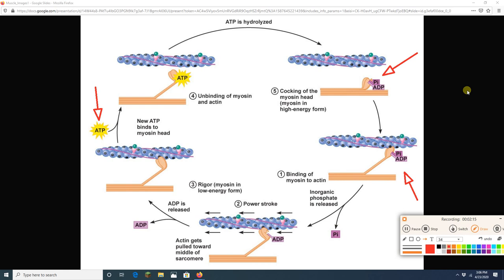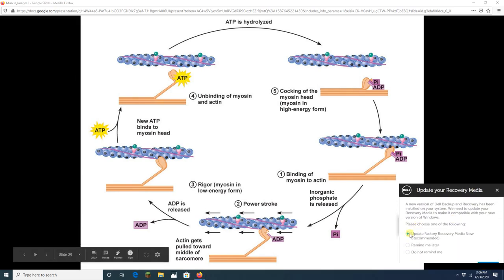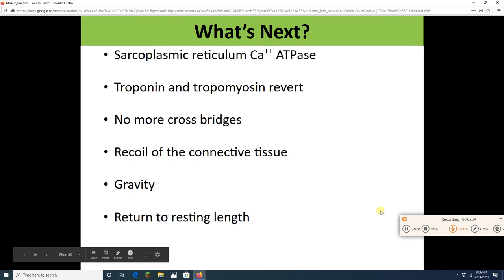Now, once we've contracted, how do we go back to normal? Well, something's going to happen. The sarcoplasmic reticulum is going to start to vacuum up the calcium it released. There is a protein called the sarcoplasmic reticulum calcium ATPase that is going to break down ATP to get calcium out of the sarcoplasm and back into the SR. With this decline in calcium, troponin and tropomyosin revert to their normal state where the actin is being blocked, so myosin can no longer grab on.